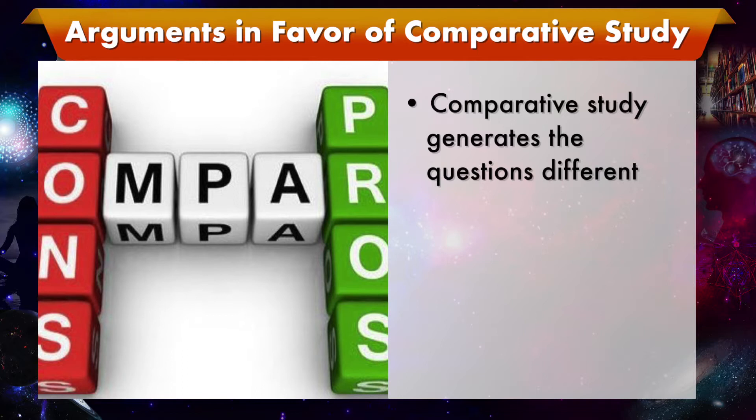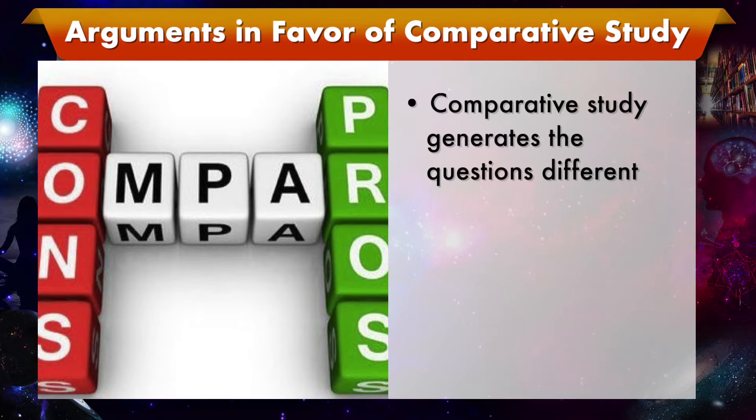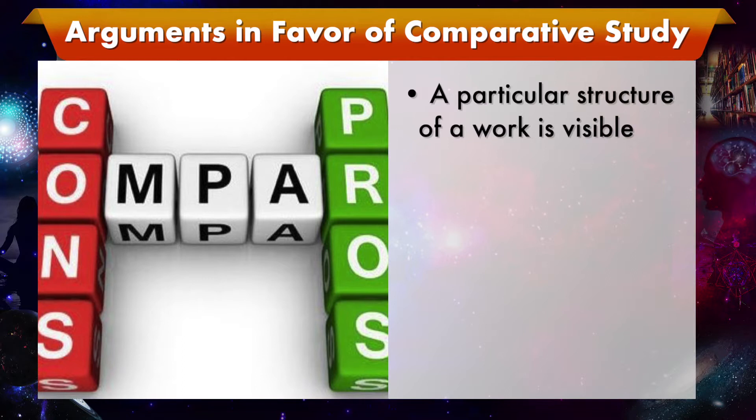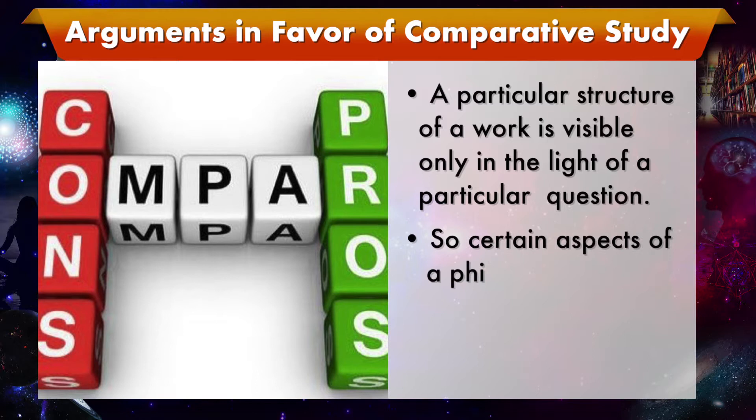In this module I have tried to argue against the above premises on the following grounds. Comparative studies generate a quotient different from a non-comparative method. A particular structure of a work is visible only in the light of a particular question. So certain aspects of a philosophical work may remain hidden unless we adopt the comparative method.